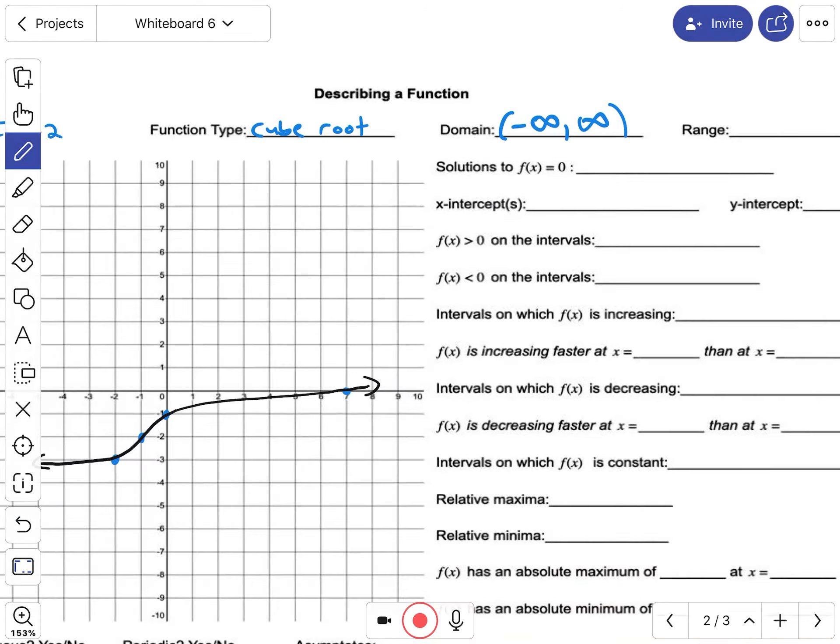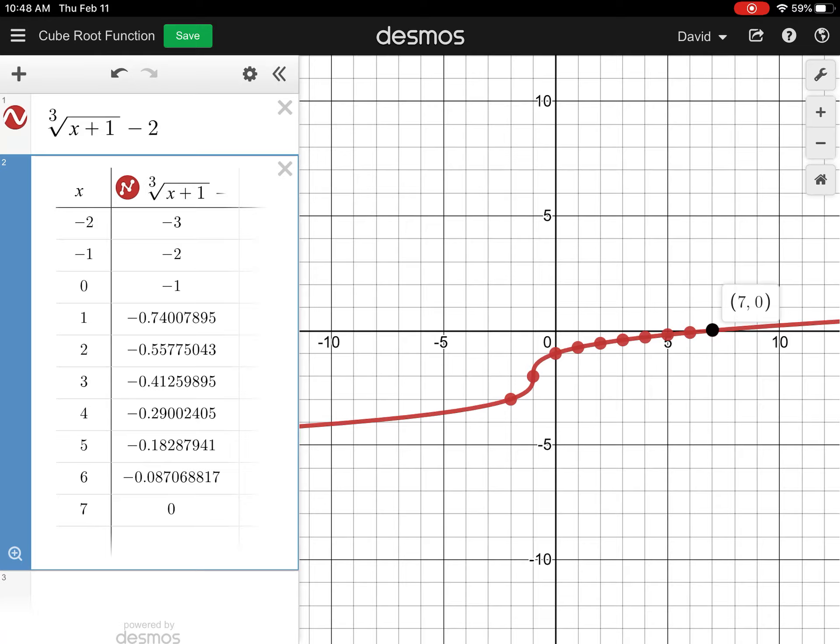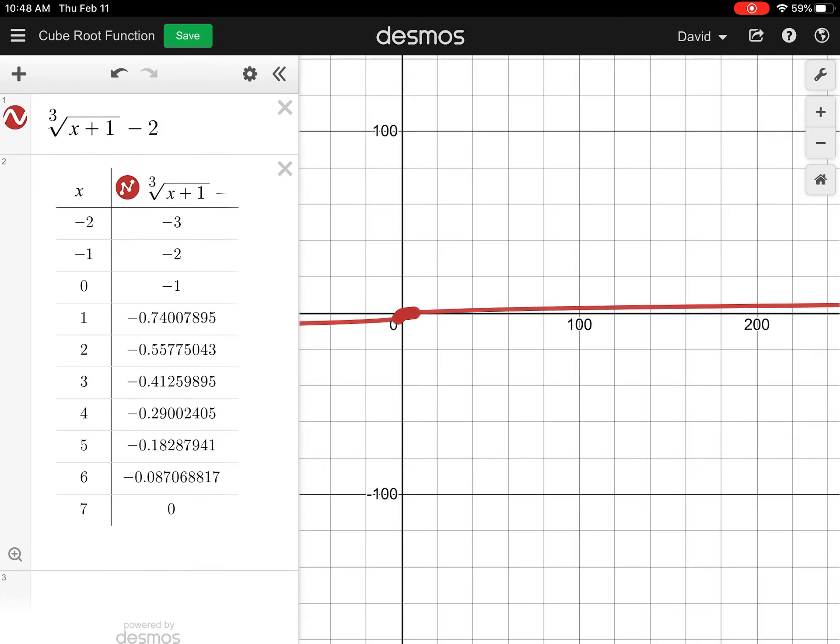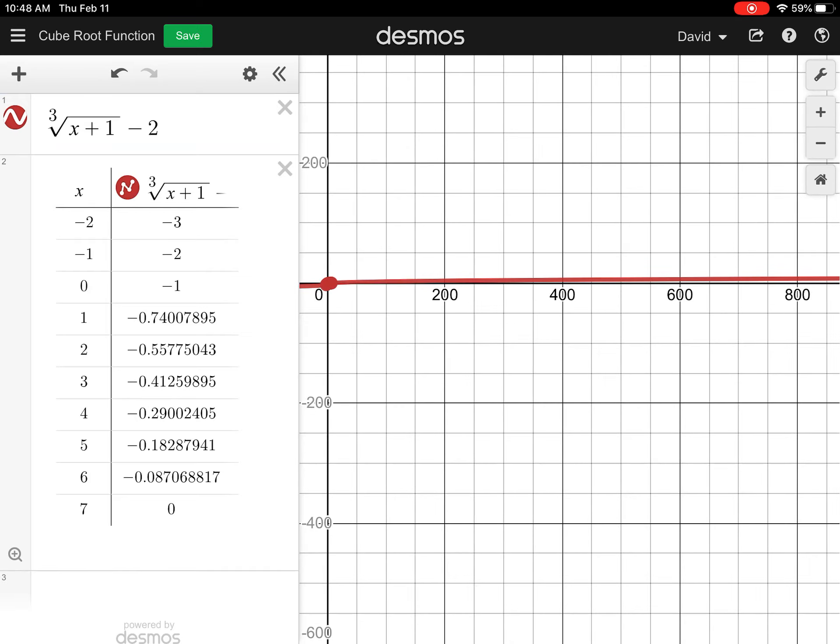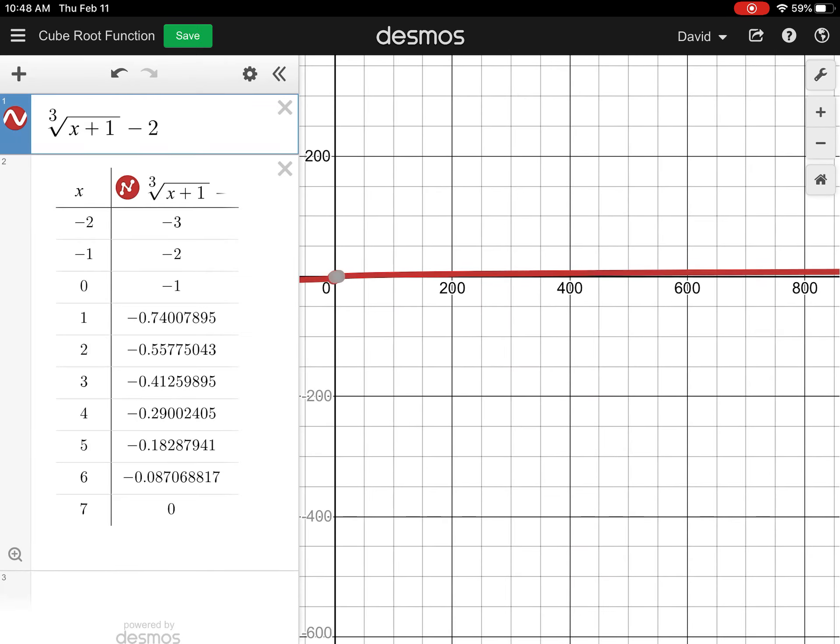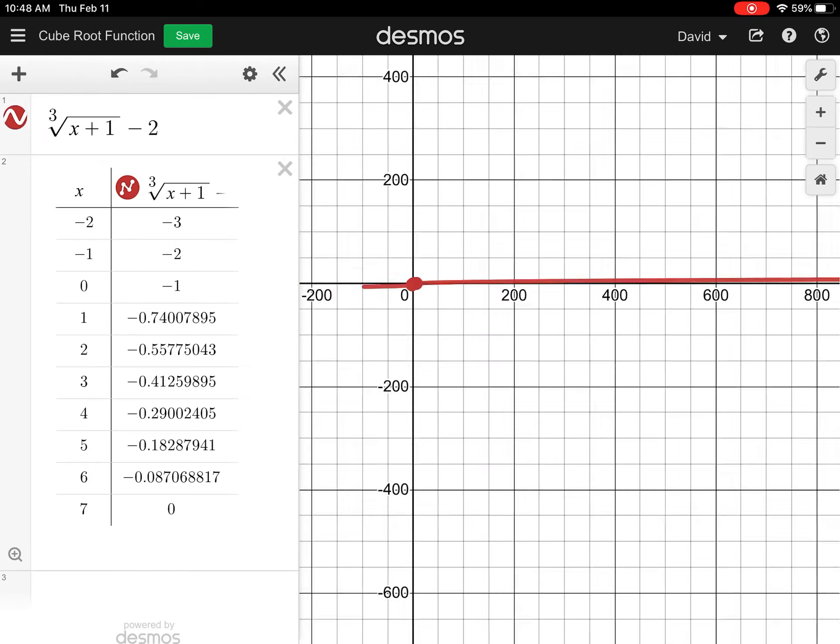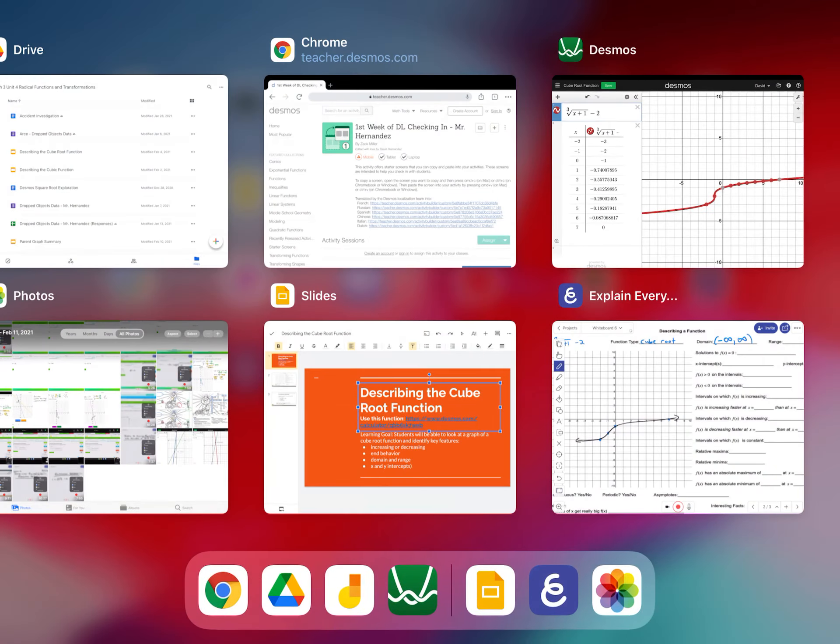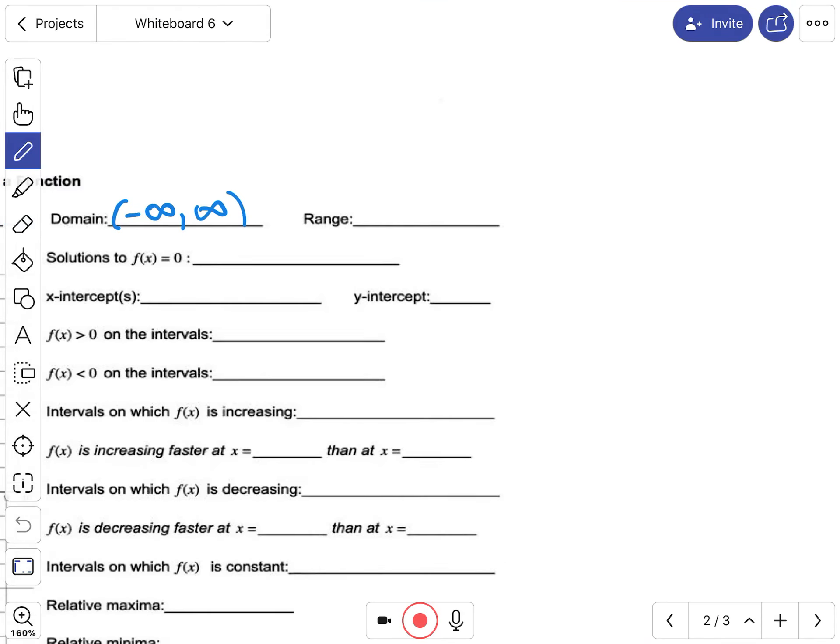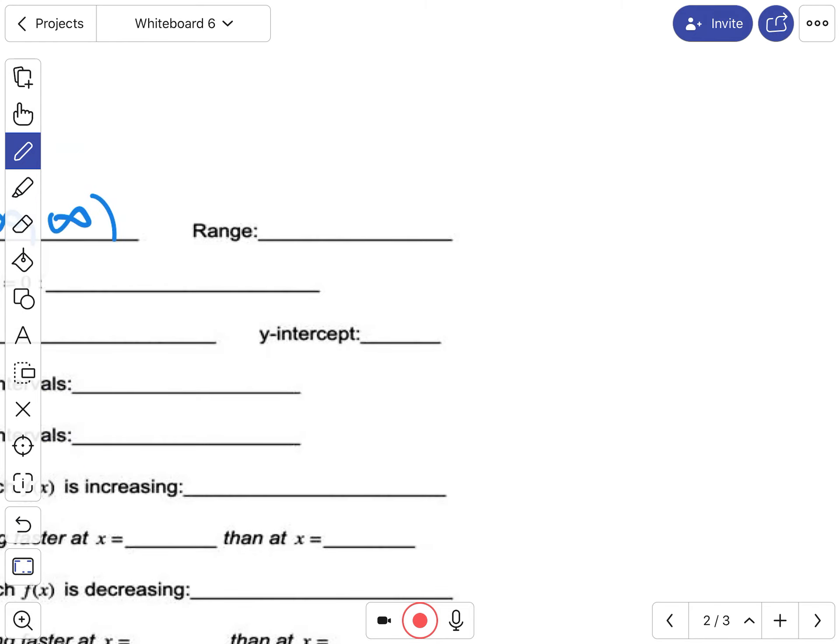Believe it or not, this function actually goes up and down forever. So if I zoom out, you can see that it looks like it's going flat, but it's actually—look at the y value—it's going up and up and up, not very fast, but it's going up for sure. And going left, same thing. You can see the x—it's negative 10—I mean, it'll go to negative 11 and so on. So yeah, this is definitely going to be going up and down forever as well. So that's the range: negative infinity is down forever, positive infinity is up forever.